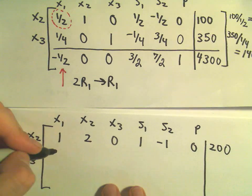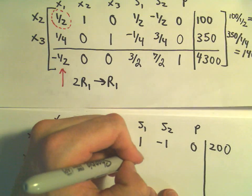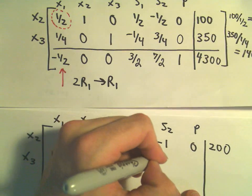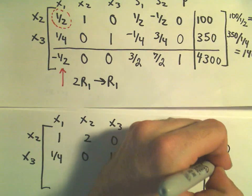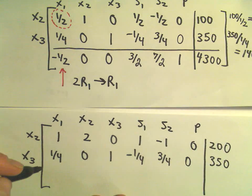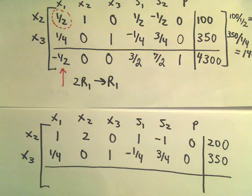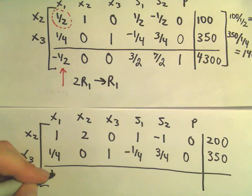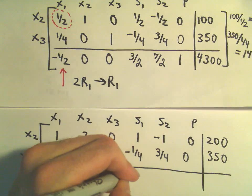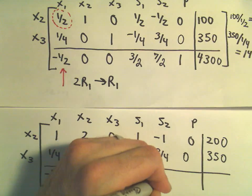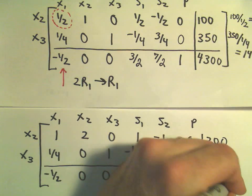The second row we'll leave alone: one-fourth, 0, 1, negative one-fourth, three-fourths, 0, 350. And we'll also leave the third row alone: negative one-half, 0, 0, three-halves, seven-halves, 1, and 4,300.